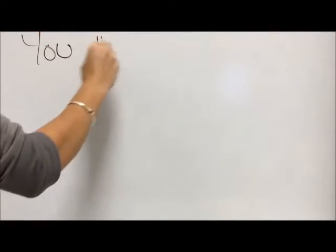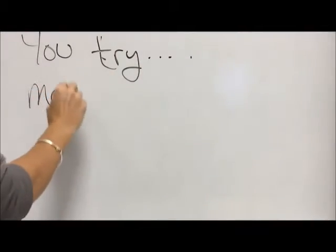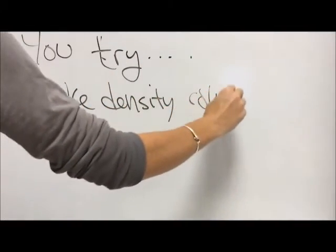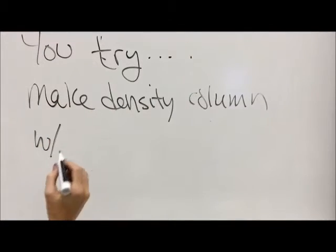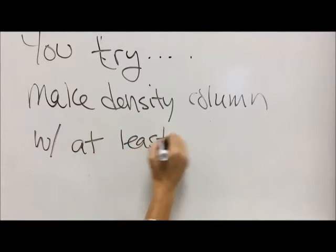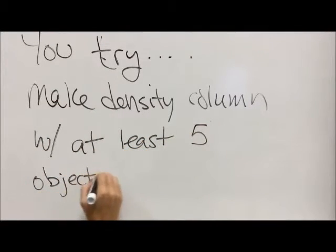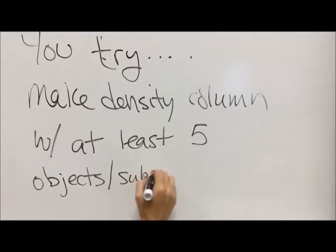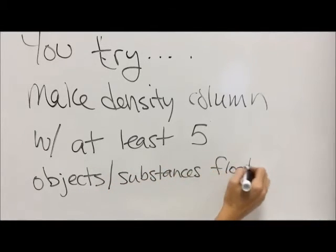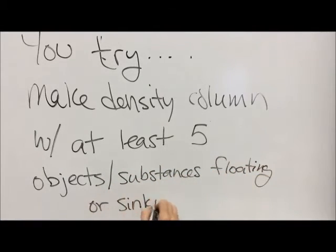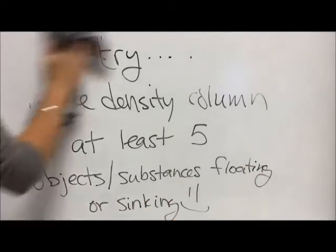So, now I want you to try to make a density column with at least five objects or substances. You can use liquids. Probably need a couple of liquids at least. And then plop things in that bad boy and see if they float or sink and discover why based on their mass and volume, which is their density.